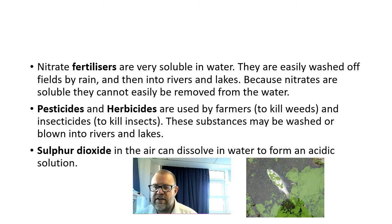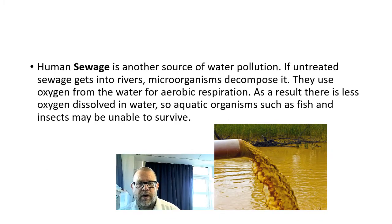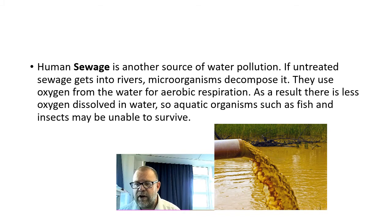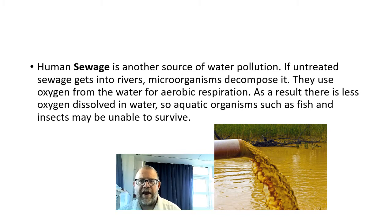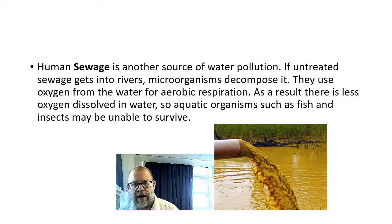Sulfur dioxide in the air can dissolve in water to form an acidic solution, making lakes and rivers acidic so fish can't survive. Human sewage is another source of water pollution — it generally goes through treatment plants, but sometimes it's discharged straight into the water. Microorganisms decompose the sewage, but they use up the oxygen from the water. As a result, there's less dissolved oxygen, and aquatic organisms die because they can't extract the oxygen out of the water.